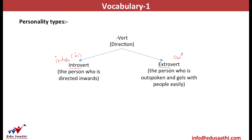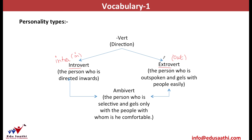Thus, an introvert is any person whom we can term as a loner — he likes not to be surrounded by people. Whereas an extrovert is a highly outgoing person; he is gregarious and amicable. There is a mix of introvert and extrovert, and the term that we get is ambivert. The word root 'ambi' means not specific. Thus, ambivert is the personality type of people who are selective and do not gel with all.